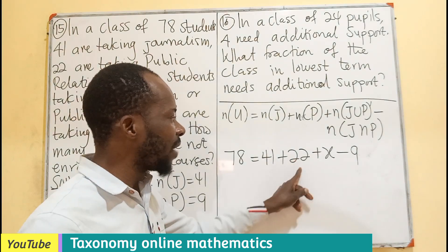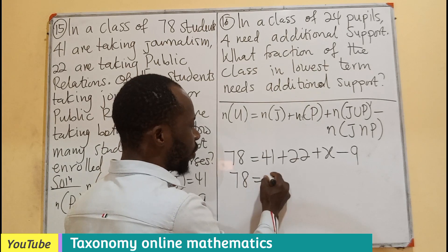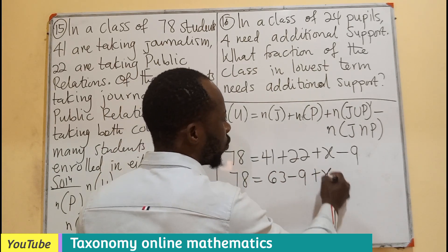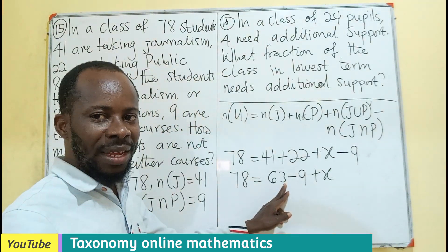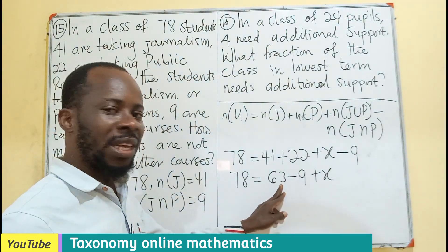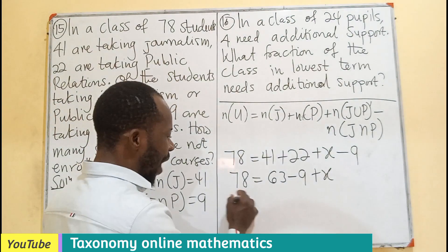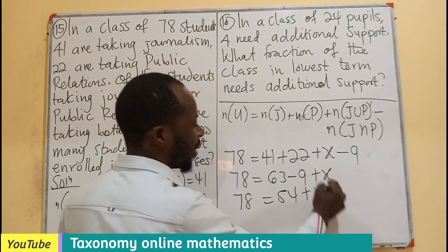I have my 78 equals to 41 plus 22 plus X minus 9. I believe this will give us 63. So we have 78 equals to 63 minus 9 plus X.